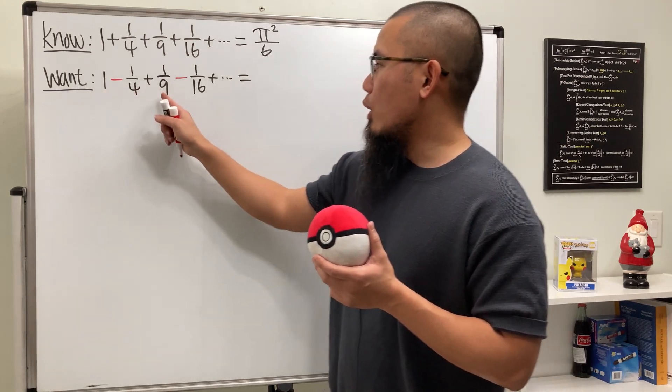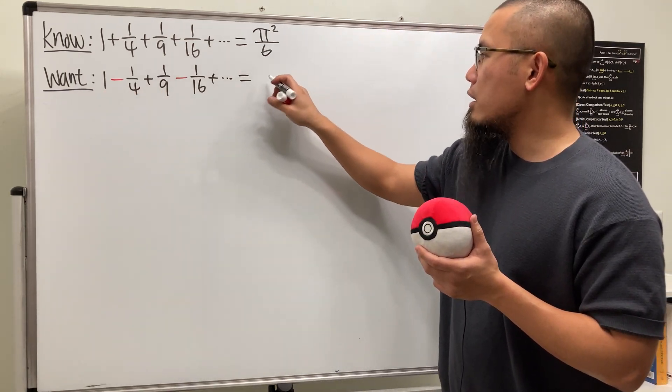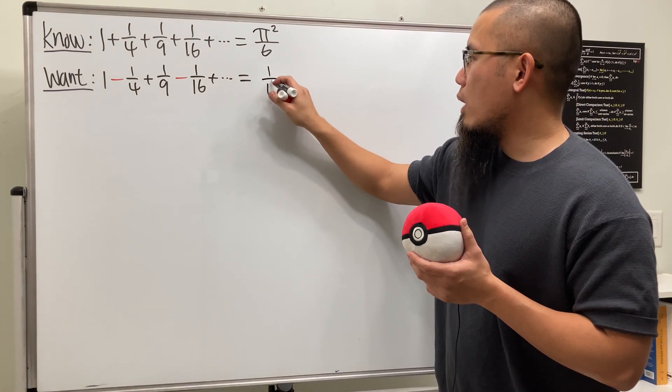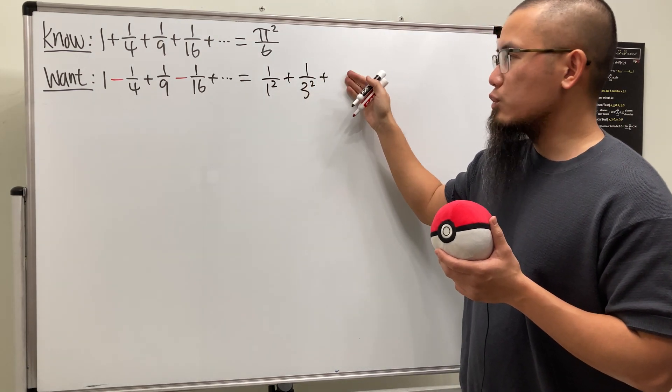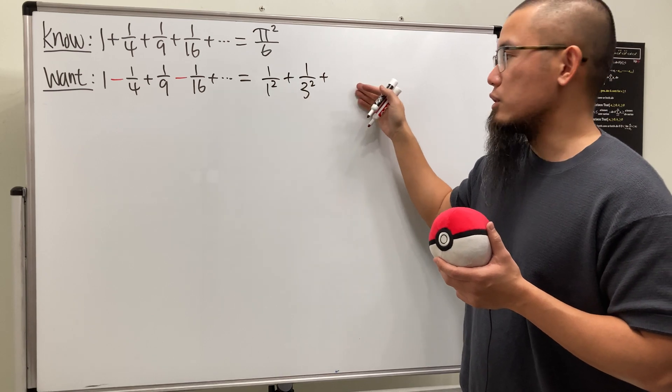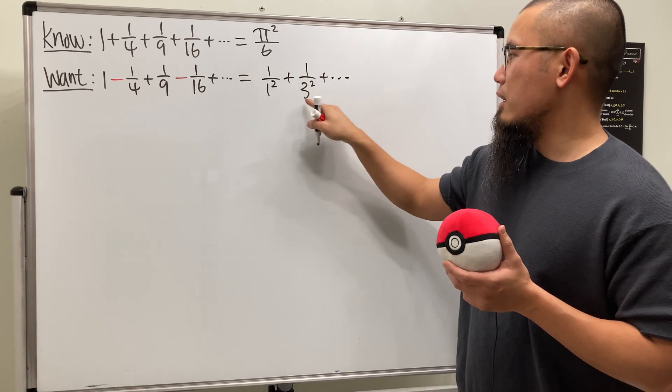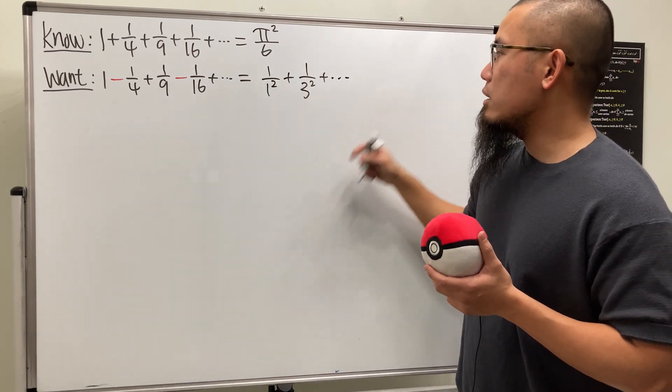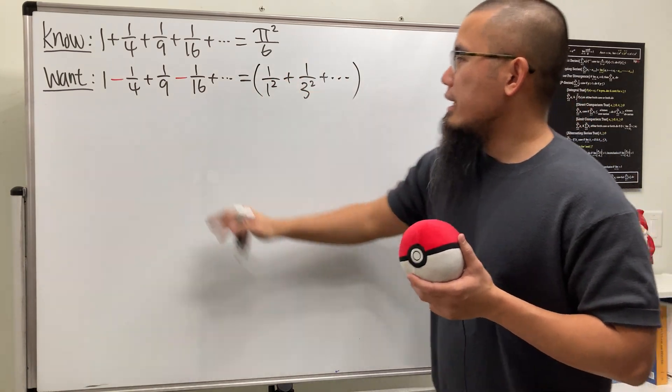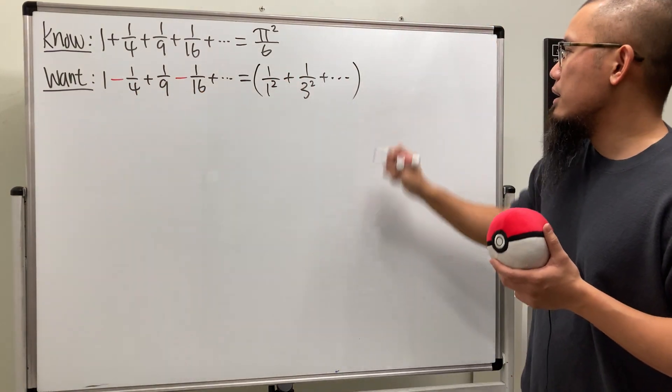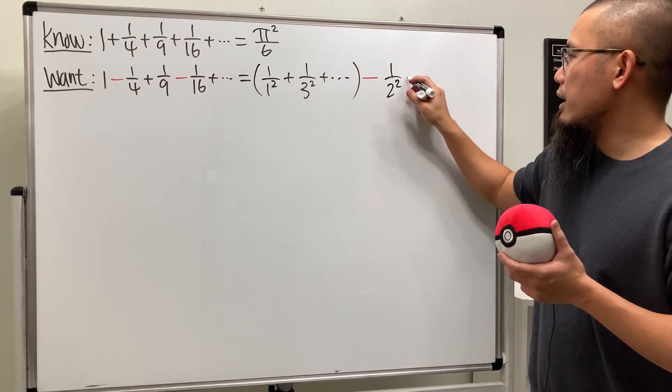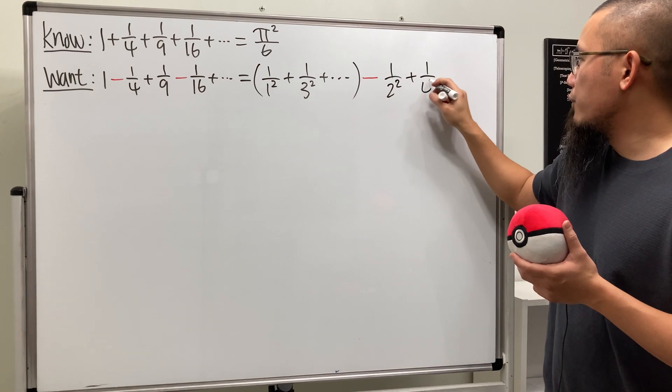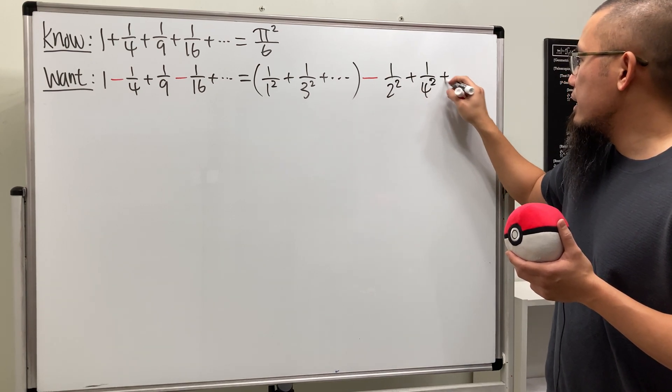First, I'm going to just put down all the positive terms right here, which is 1 over 1 squared, and then we have 1 over 3 squared, and then the next one is 1 over 5 squared, and so on. We all have the odd number denominator right here, and of course to a second power. And then let's go ahead and put down the rest. We have minus, and then we have 1 over 4, which is 2 squared, and then plus 1 over 4 squared, and so on.